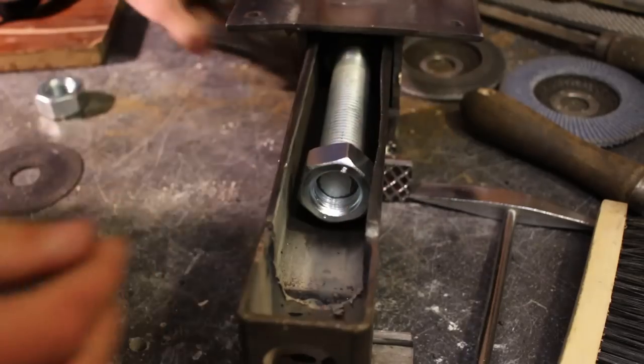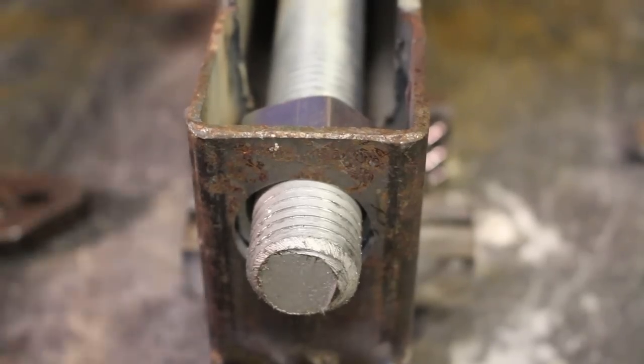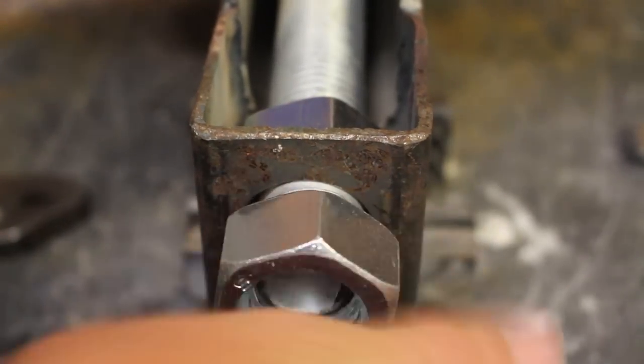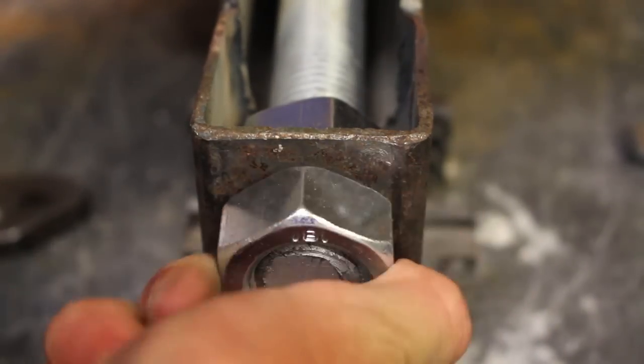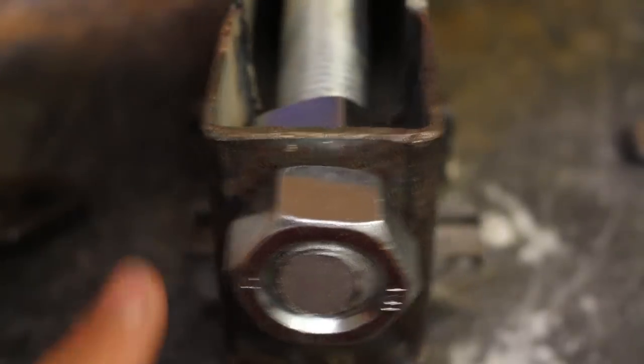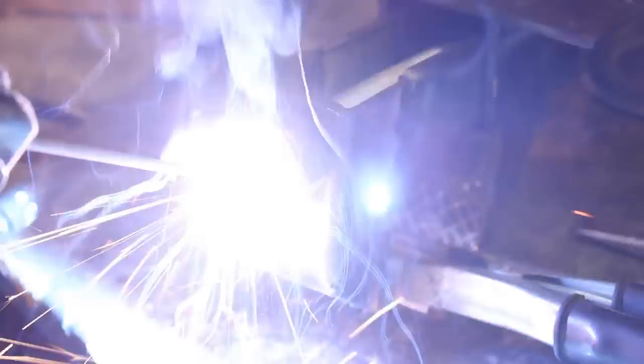I then flipped the vise over and threaded on another M24 nut onto the lead screw. I pushed the end of the lead screw through the hole in my moving jaw and threaded on yet another nut. I tightened up the nut so there was a bit of clearance between the two nuts which the sheet metal can go in between. I welded the nut onto the lead screw so it would never spin off the lead screw again.